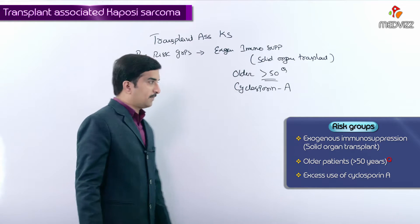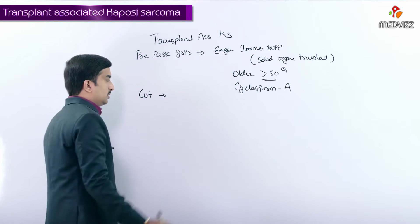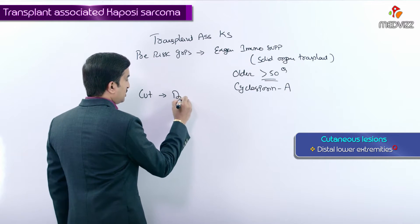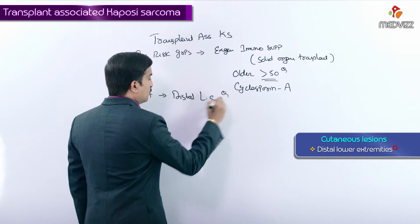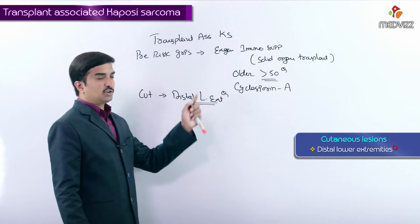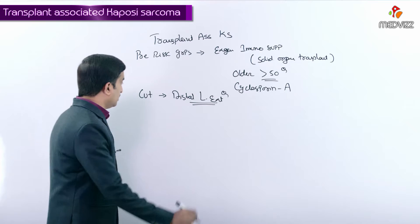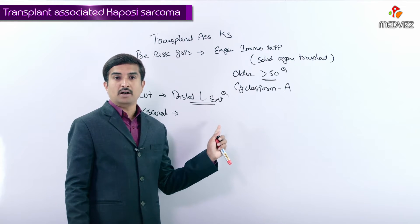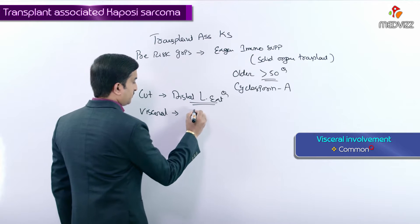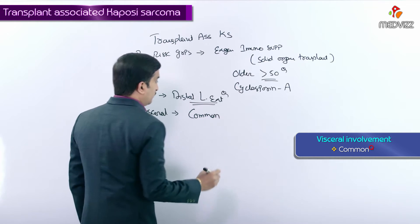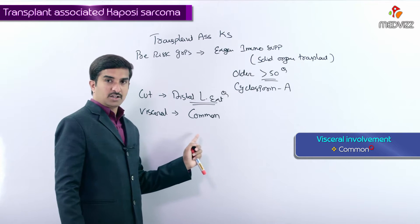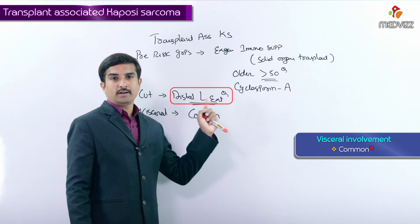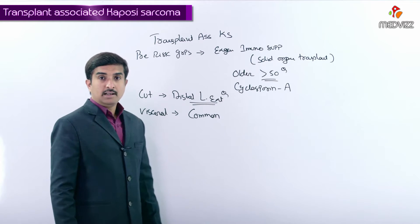Cutaneous involvement is more commonly seen at the distal lower extremities, which are the most common cutaneous sites associated with transplant-associated Kaposi sarcoma. Visceral involvement is relatively common in this third type. So we have both cutaneous involvement at the distal lower extremities as well as visceral involvement.